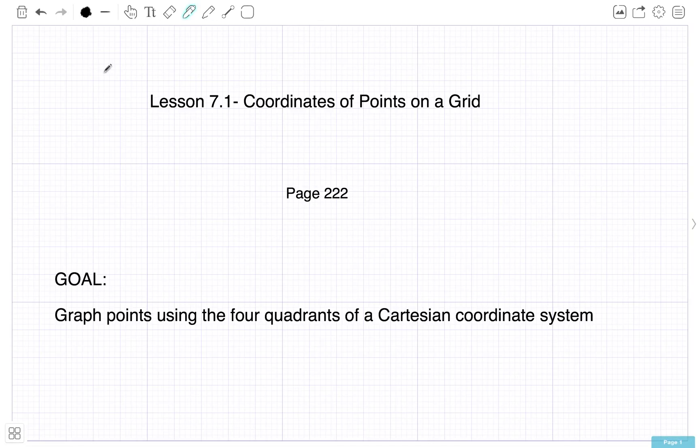Alright, hello grade 8s. Welcome to Lesson 7.1, Coordinates of Points on a Grid. Find your textbooks on page 222. The goal for this lesson is to graph points using the four quadrants of a Cartesian coordinate system.